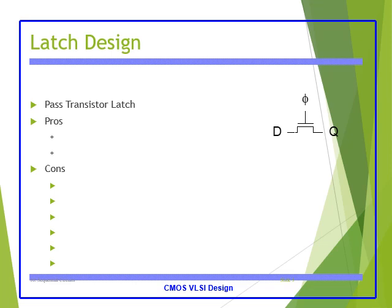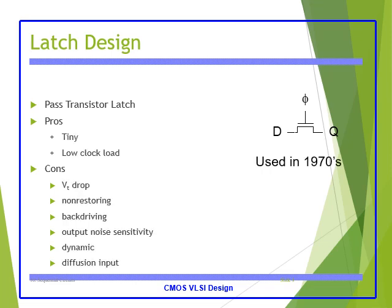Here, Latch Design is shown. In the pass transistor latch, we have a tiny shape and low clock load. Constants include voltage threshold voltage drop and non-restoring, back driving, output noise sensitivity, dynamic operation, and diffusion input. It was used in the 1970s.